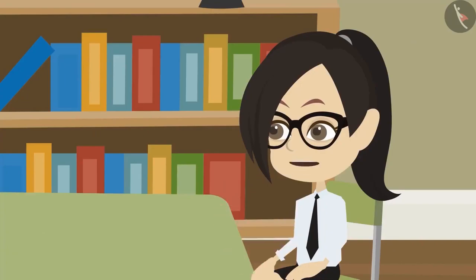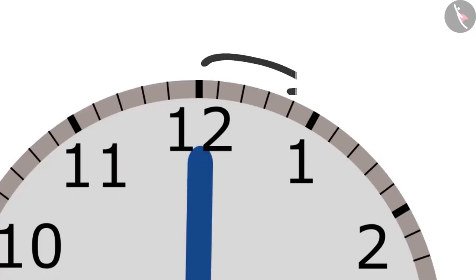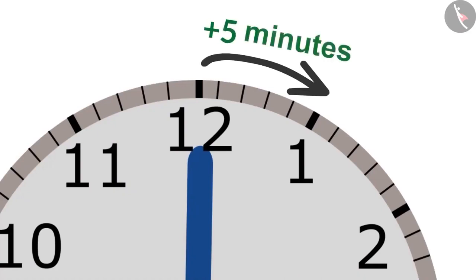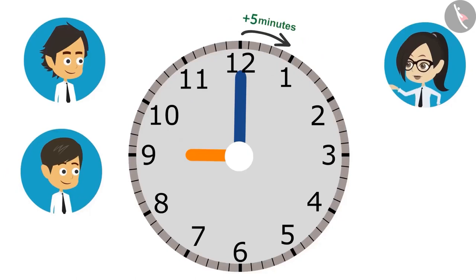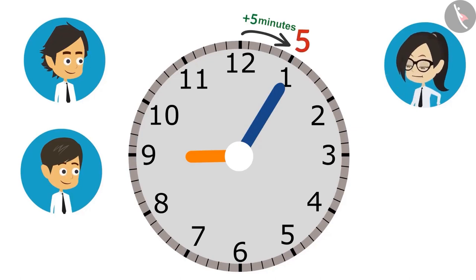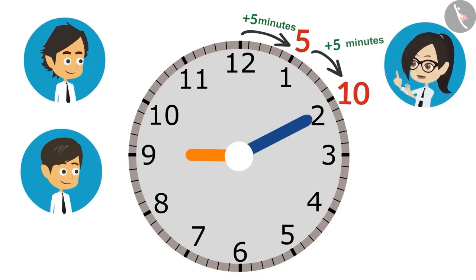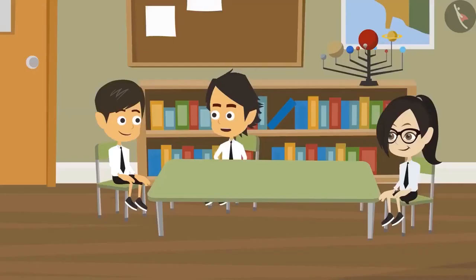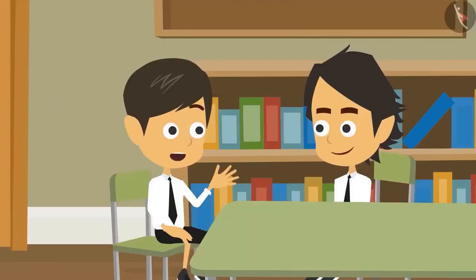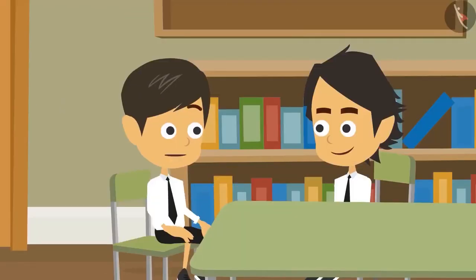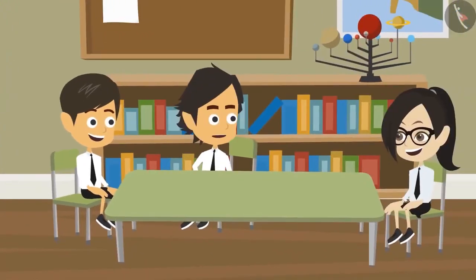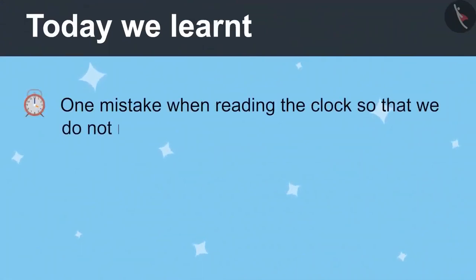It is very easy to read minutes. The minute hand takes 5 minutes to go from one number to another. That's why when the minute hand moves from 12 to 1, it is not 1 minute but 5 minutes. When the minute hand reaches 2 from 12, it has been 10 minutes. This means it takes 10 minutes from home to reach school. Today we learned about one mistake when reading the clock so that we do not repeat it.